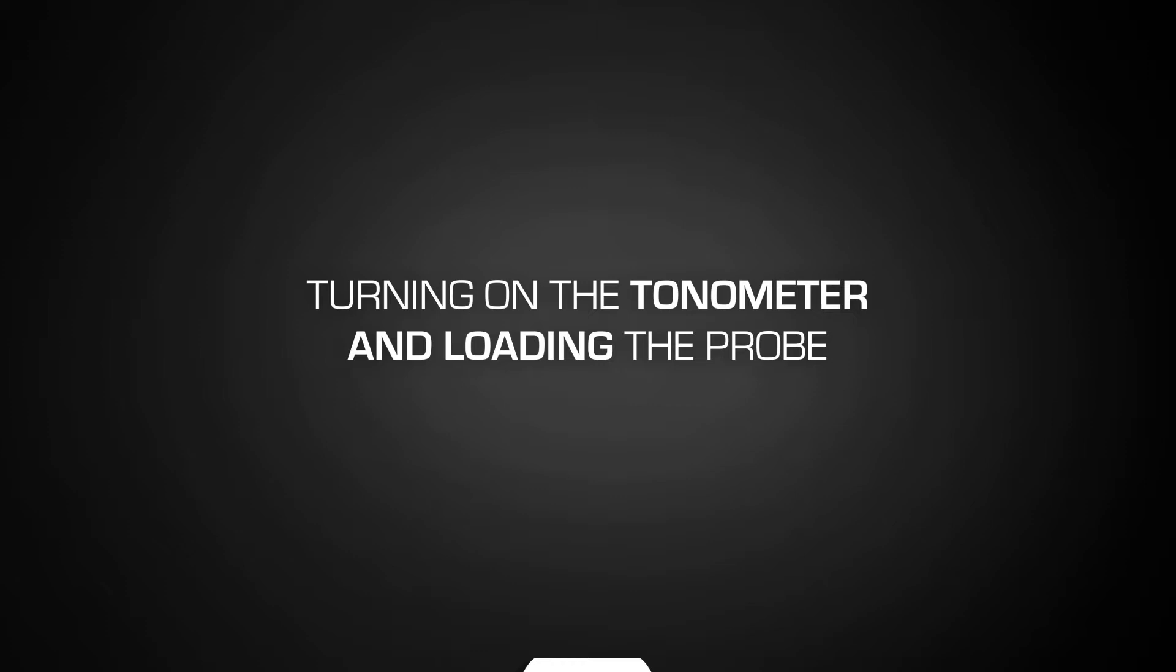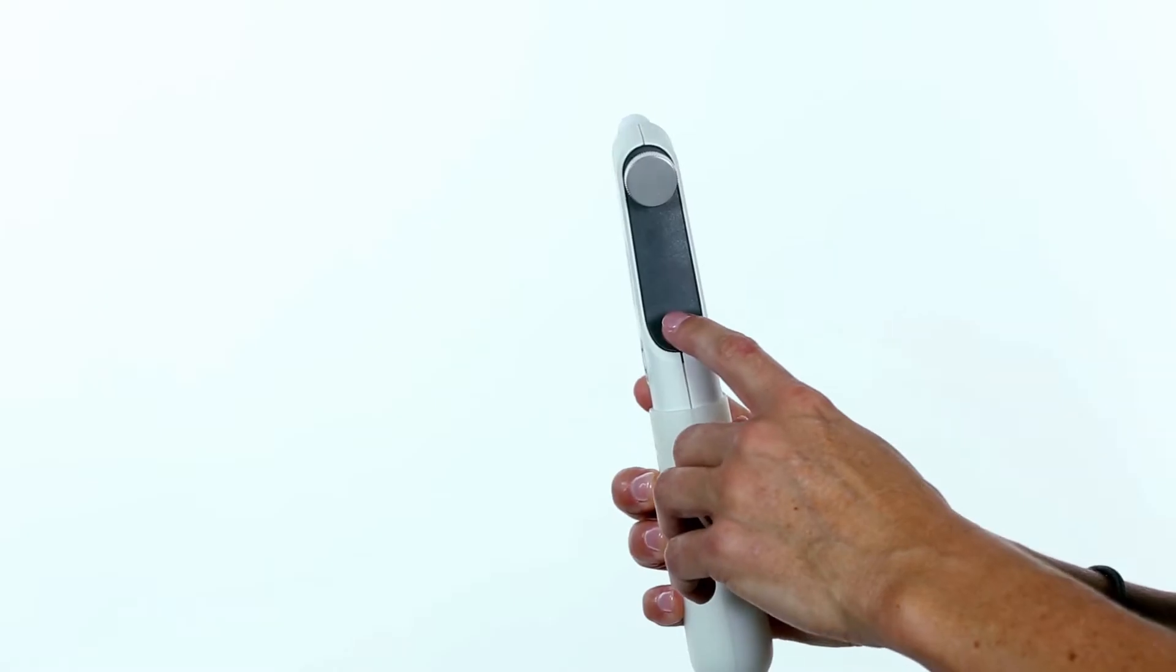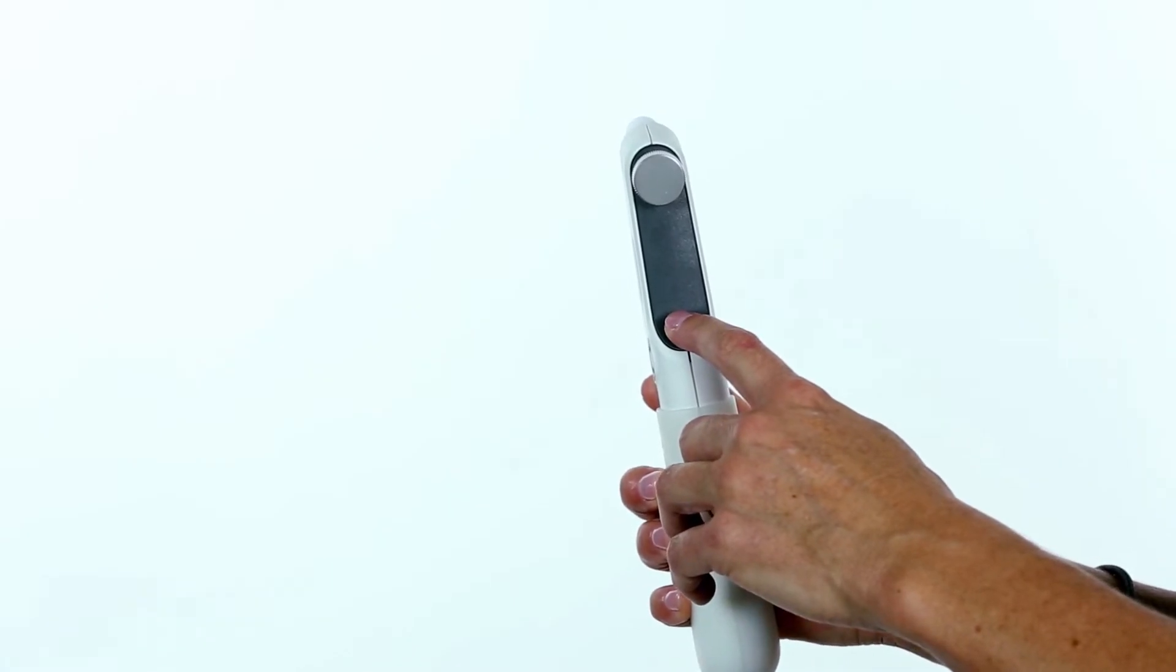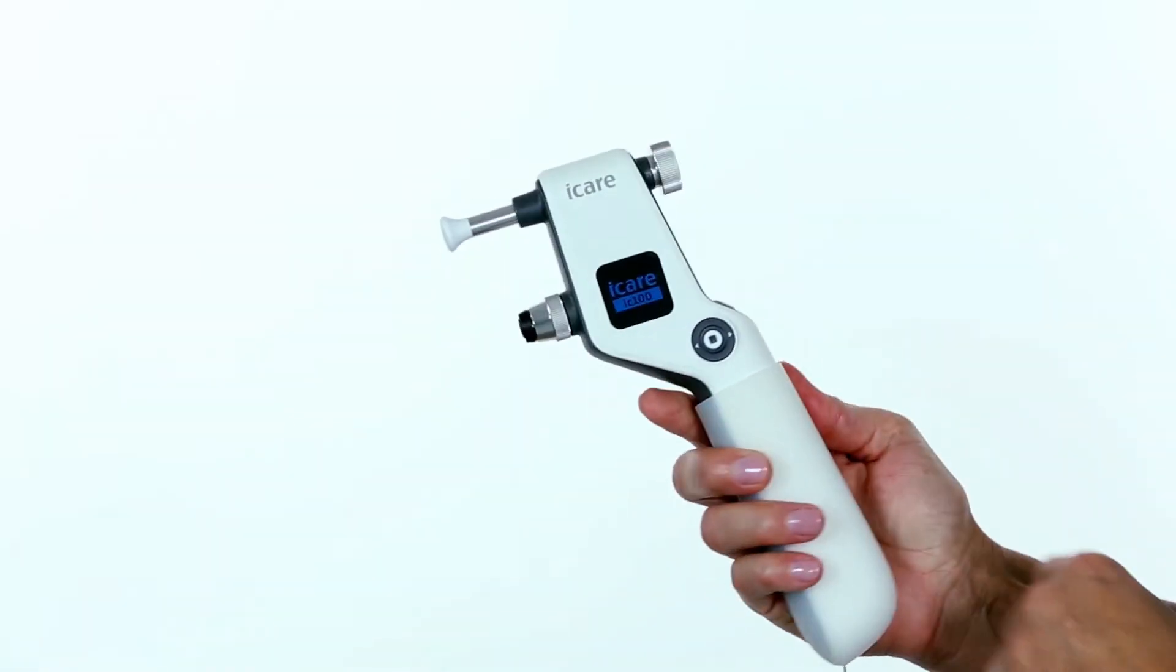Turning on the tonometer and loading the probe. To turn on the tonometer, press and hold the measure button for three seconds, or until you hear a beep.